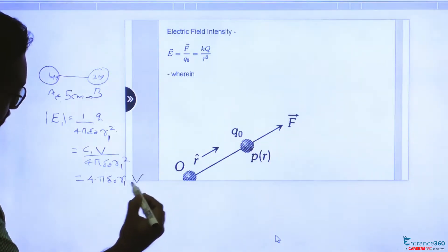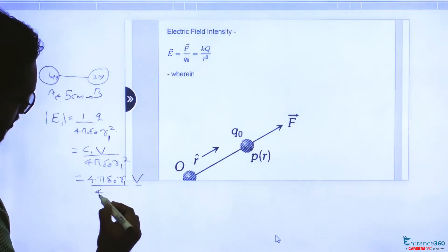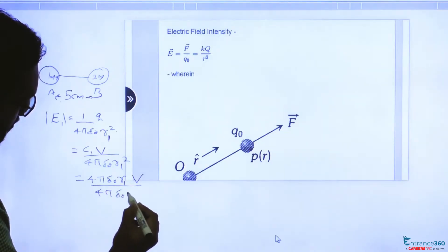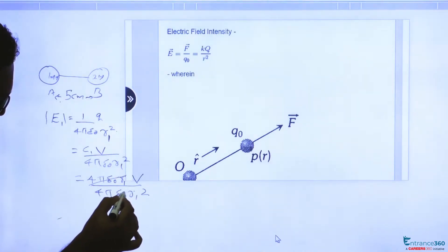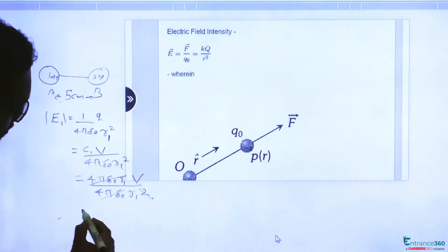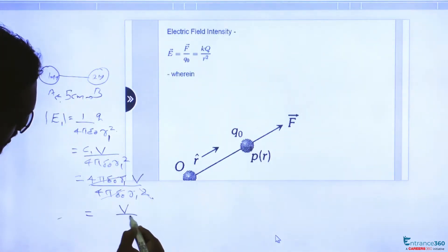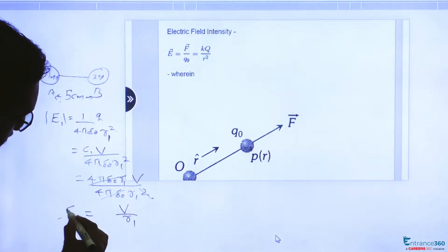Into V divided by 4 pi epsilon 0 r1 square, so this will be V by r1. This is E1.